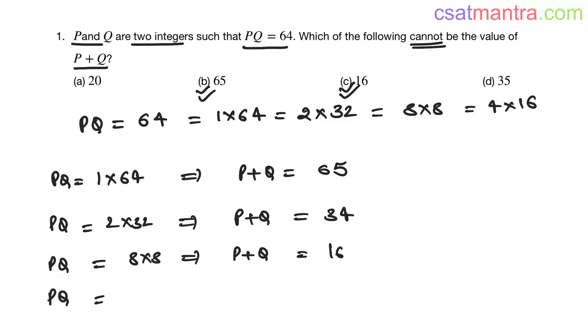P plus Q. So P plus Q cannot be 35 in any case, my friends. So our answer is D.